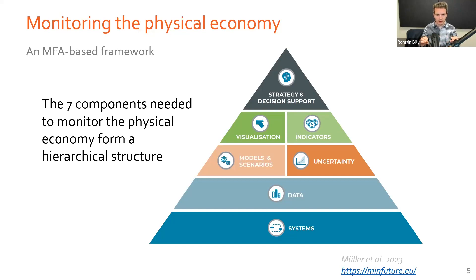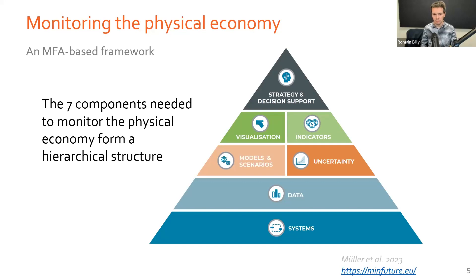At the bottom of the pyramid, we have the systems. If you don't understand how a system works — how the different stages in your system are structured, what the structure of the aluminum industry is — then even if you have very good data, you will probably interpret it wrong. So the basis is the system, and then on top of it you need good data. When you have that, you can start making models and scenarios, calculating uncertainty, making nice visualizations, developing performance indicators, and all of this can be used for strategy and decision support. But it's only as good as the bottom of this pyramid.